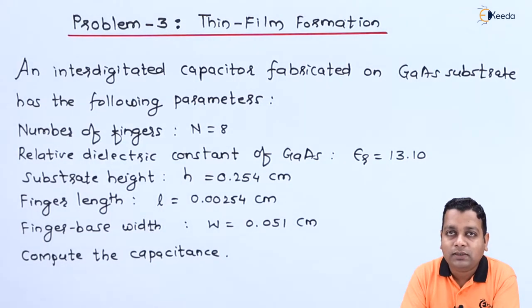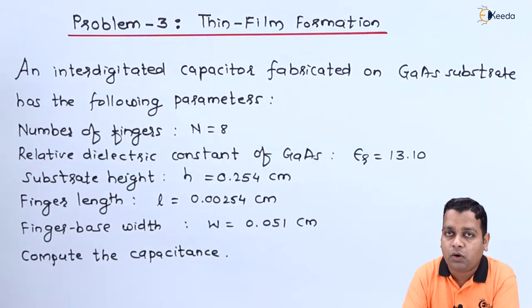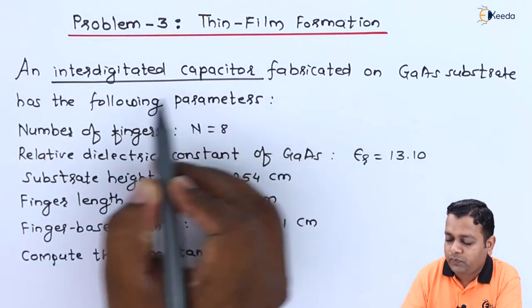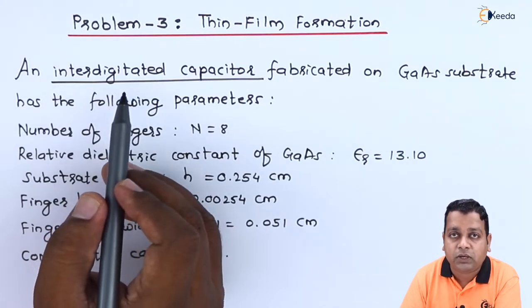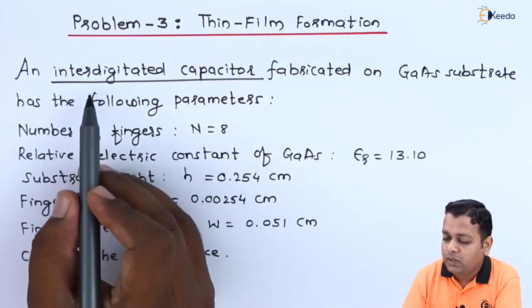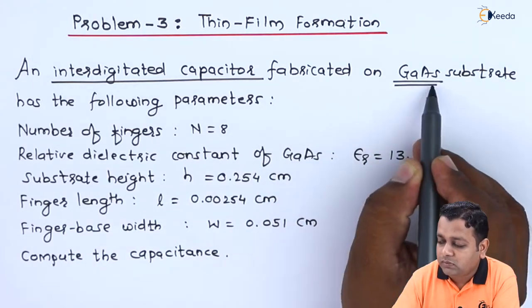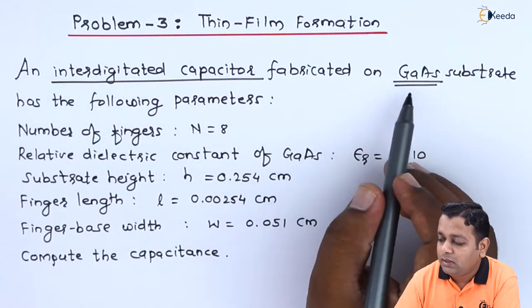So as seen in the topic, thin film formation, after the resistive and the inductive type of the thin film formation, for the capacitive type we had the two subtypes there. One it was for the metal oxide metal type of the capacitive film, whereas the second it was the interdigitated capacitor. So this problem is with respect to the second subtype of the capacitive thin film formation here. So we have interdigitated capacitor to be fabricated on the substrate is mentioned by the material gallium arsenide.